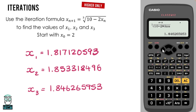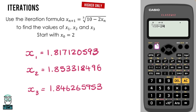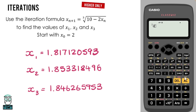Alternatively, we can store numbers using the store button. After getting the first solution 1.817, click the store button then press A to save it. Retype the formula, press alpha and select A to recall that number — it gives our second solution. Store the second solution as B, retype the formula, use alpha B, and we get the third answer, which we store as C.